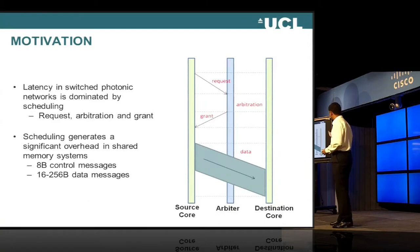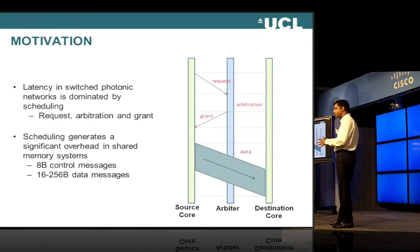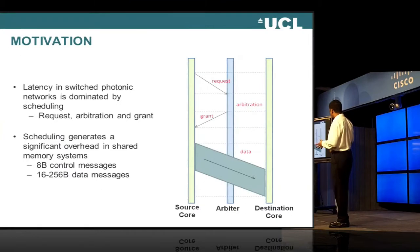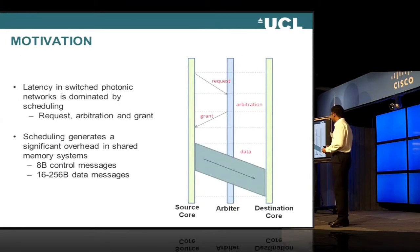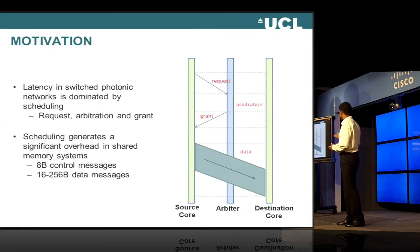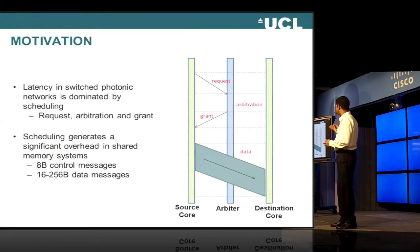The arbiter will see whether the source core or the destination core are taken up in previous communication, and if not, a path grant would be sent back to the source core. From then on, serialization would occur, and the data would be sent from the source core to the destination core via the optical path that has been opened. The first three steps — request, arbitration, and grant — comprise the overhead in this communication. The purpose here is just to open the path so that the communication can actually occur.